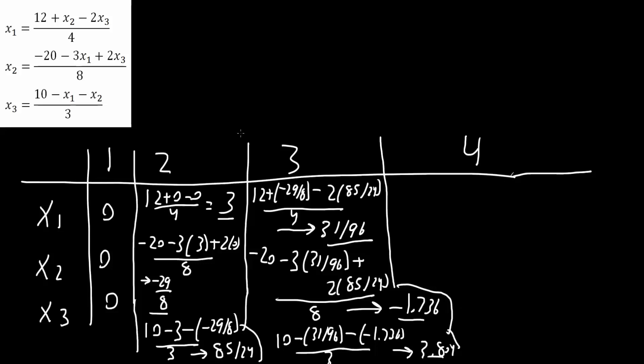And just a quick recap. So the first iteration for x1 was 3, x2 was negative 29 over 8, and x3 was 85 over 24. The second iteration, x1 became 31 over 96, x2 became negative 1.736, and x3 became 3.804.